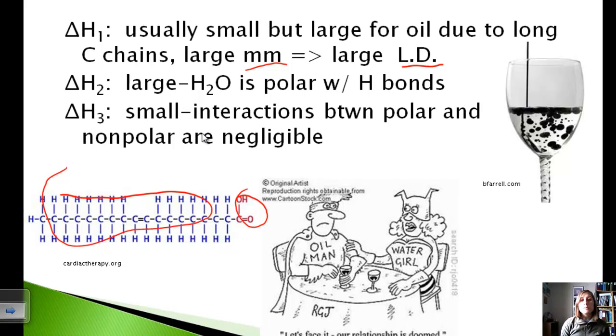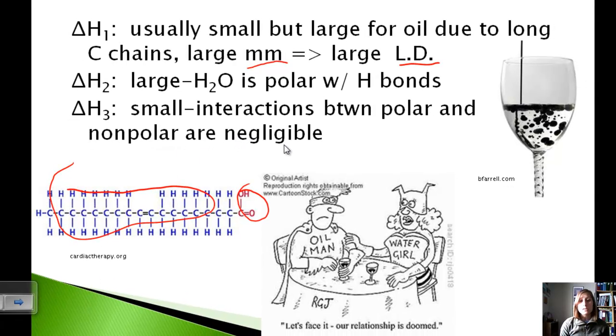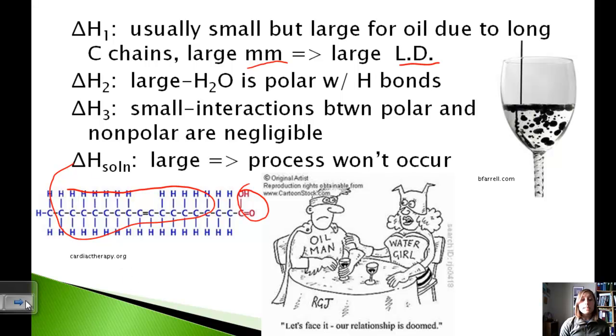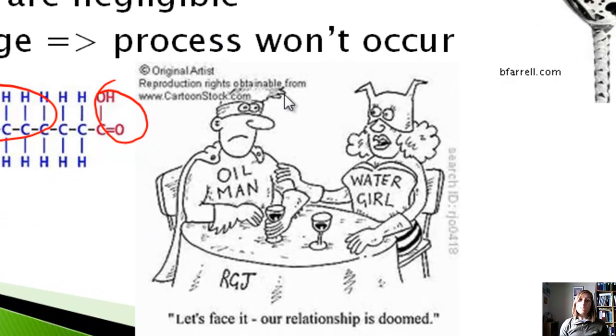That's because interactions between polar and nonpolar substances are very negligible. It's not really going to happen very often. So you've got a large delta H sub 1, a large delta H sub 2, and a very small delta H sub 3. So when we put all those together, we get a very large value for the delta H of solution because we've got endothermic, endothermic, exothermic. And so because this delta H value is so large, that means that the process probably will not occur as seen in the funny cartoon.